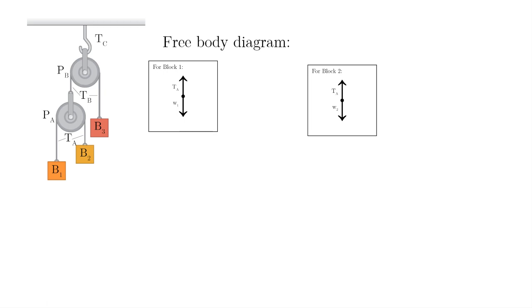For the FBD of block 3, it only has one pulley, so this block will have a different tension. ΣFx is equal to 0, while ΣFy is tension B minus weight 3.